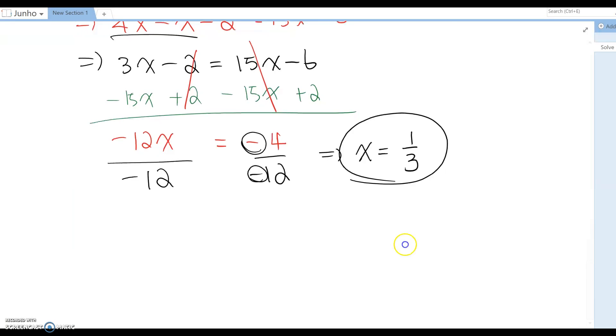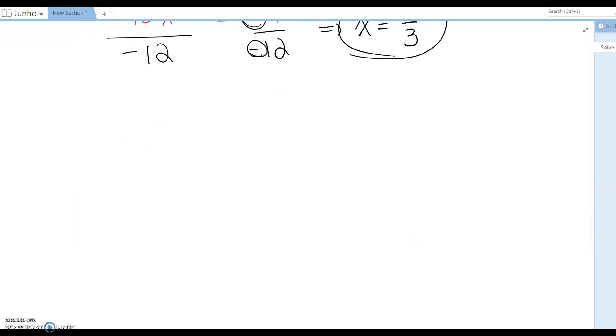So what about a question containing decimals? The question is 0.48x minus 0.08x equals 0.12 times 260 minus x.